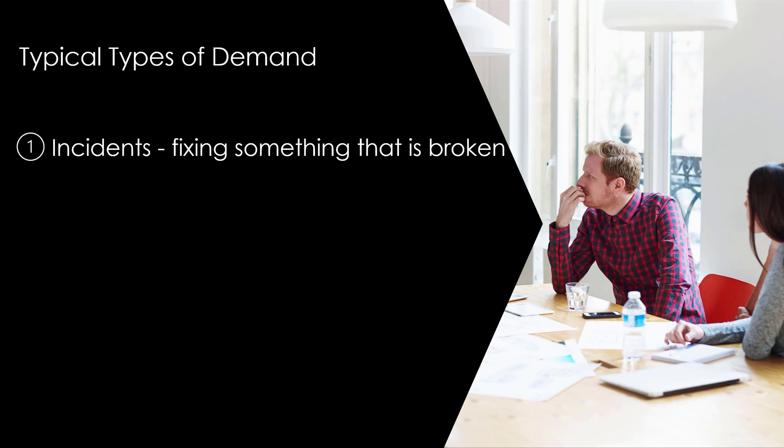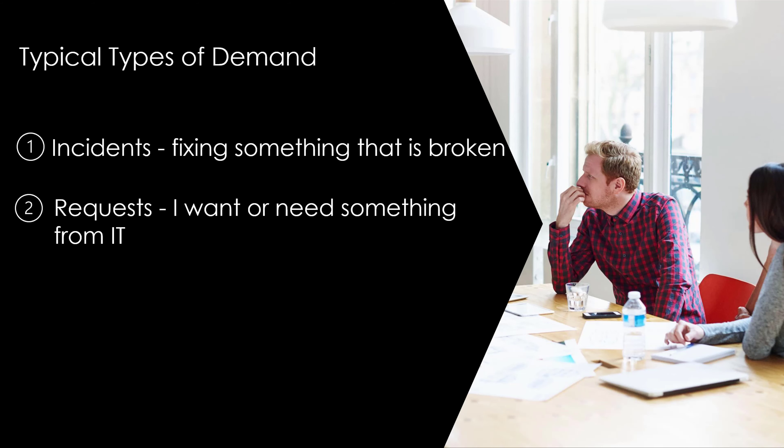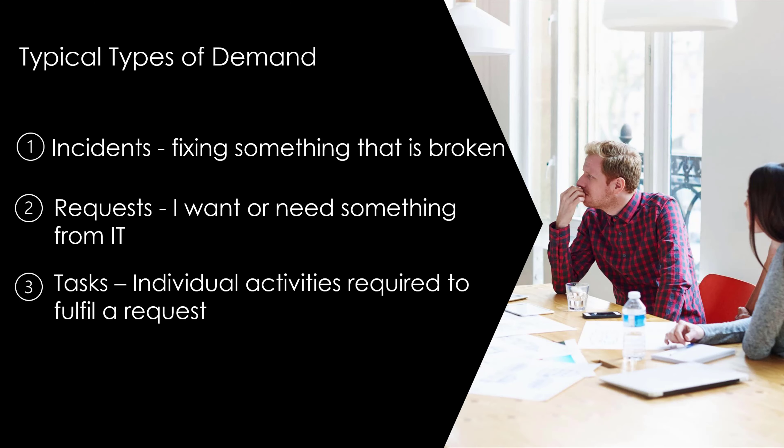Fixing something that's broken. Requests — I want or need something from IT. Tasks — individual activities required to fulfill a request. Secondly, we need to understand the ratio of demand: how much time are we fixing or fulfilling basic requests? When we do this, we're able to plan more appropriately, have a better level of discussion with our business, and ensure skill sets are aligned and allocated accordingly.